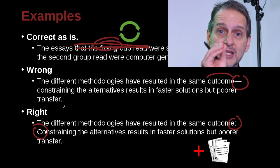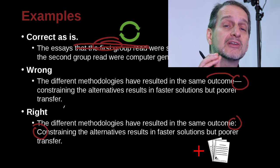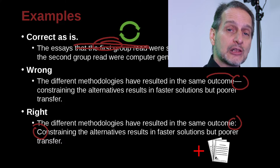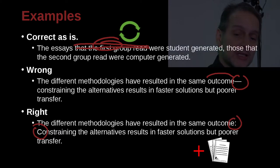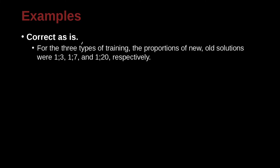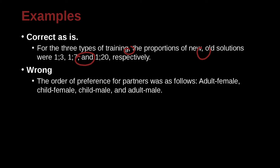You can put two sentences together — it's a way to show these two ideas fit together. Don't do it too much though. For the three types of training, the proportions of new to old solutions were one to three, one to seven, and one to 20, respectively. So here we have a very easy comma list.